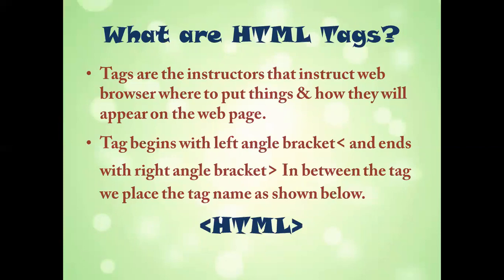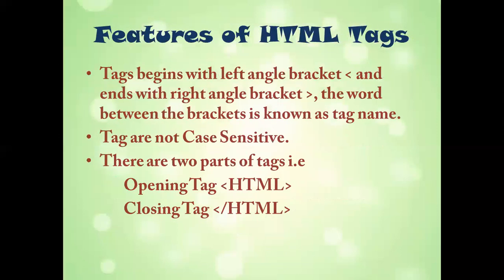A tag begins with a left angle bracket and ends with a right angle bracket. The word in between is known as the tag name. For example, 'HTML' placed between left and right angle brackets makes it a tag. One important thing to remember: there should not be any space between the angle bracket and the word you are writing. If there is a space, it will not be considered as a tag.